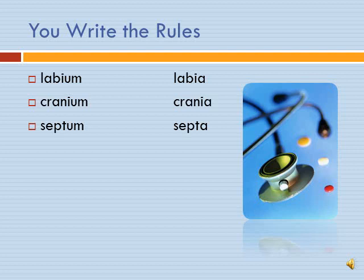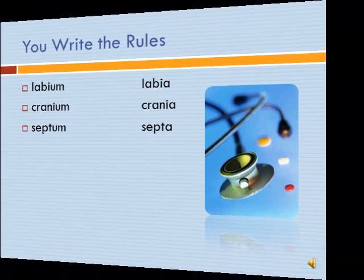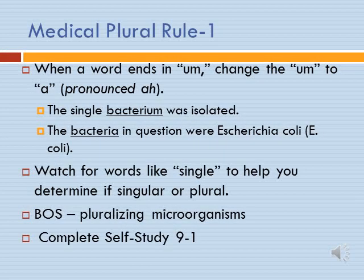Let's look at our first rule for pluralizing medical terms. Labium becomes labia. Cranium is singular; crania is plural. Septum is singular; septa is plural. What's the rule here? Can you see the common rule? Click on the next slide. When a word ends in U-M, change the U-M to A, pronounced as a long A.